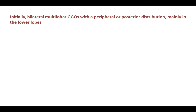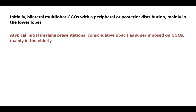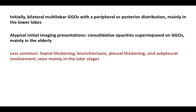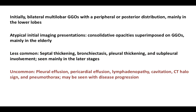To summarize: initially, bilateral multilobar ground glass opacities with peripheral or posterior distribution are seen, predominantly in the lower lobes. Sometimes consolidated opacities co-exist with GGOs, more common in the elderly. Septal thickening, bronchiectasis, pleural thickening, and subpleural involvement are uncommon but may be seen in the later stages of COVID infection.